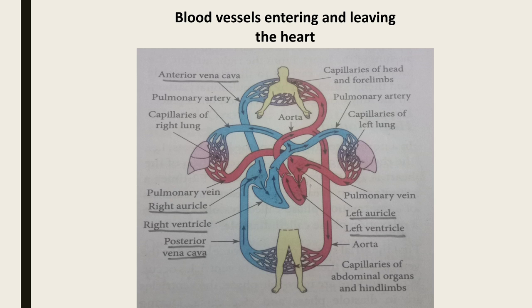The second blood vessel leaving the heart is the aorta. The aorta arises from the left ventricle. Just look at the left ventricle — the blood vessel arising from it is the aorta. This aorta carries the oxygenated blood, which supplies all the body parts both above and below the heart. These are the four blood vessels entering and leaving the heart.